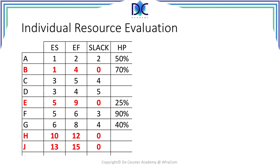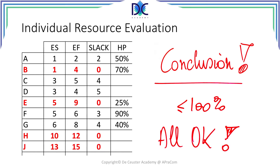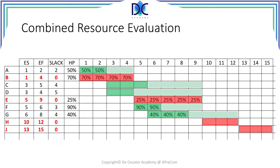We see in the column for Harry Potter that the commitment in all cases is lower than 100%, so that means all is okay — Harry Potter is not overcommitted to the tasks. Now we look at the Gantt chart again and we put the commitment into the fields where the tasks are planned to be completed.